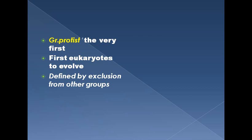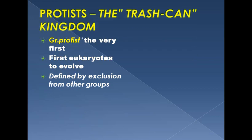These are the simplest eukaryotes and are supposed to have evolved from prokaryotes. They are defined by exclusion from other groups, meaning that the members of this kingdom do not fit into any of the other three kingdoms — Fungi, Plantae, or Animalia. This is the reason protists are sometimes called the 'trash can kingdom,' as the members are excluded from the rest of the kingdoms.